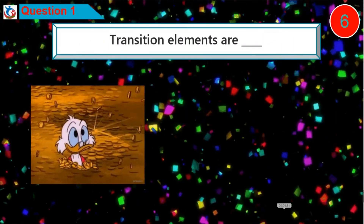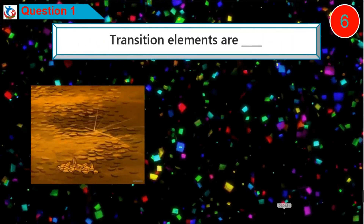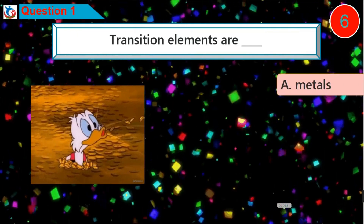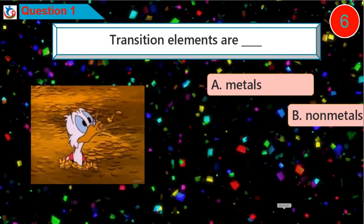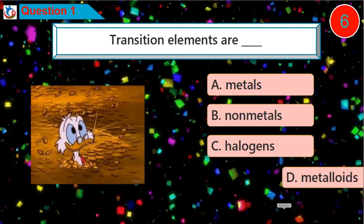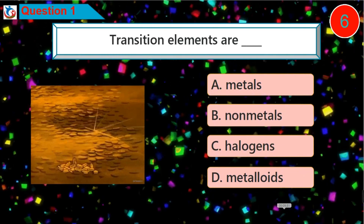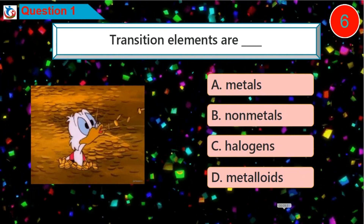Question 1: Transition elements are — A. Metals, B. Nonmetals, C. Halogens, D. Metalloids.